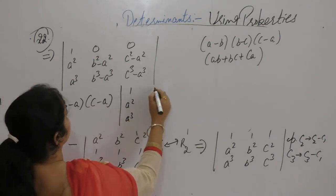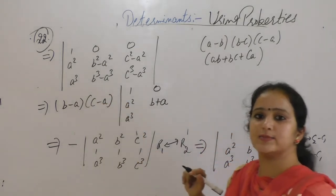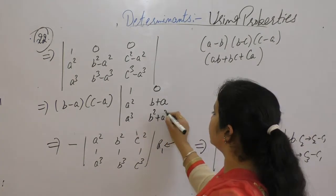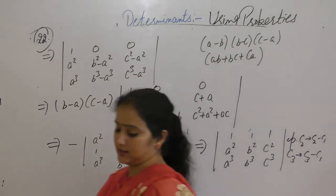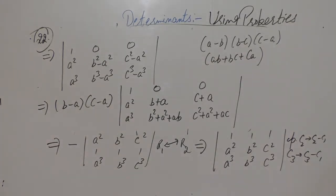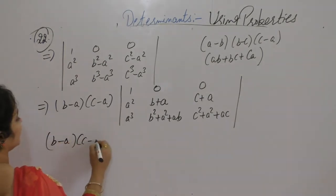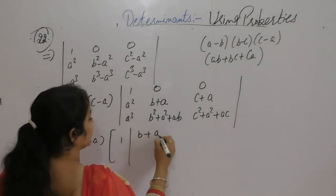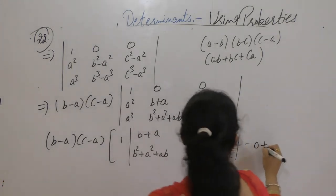After factoring (b minus a) and (c minus a): row 1 is 1, a squared, a cubed; row 2 entries become 0, b minus a with (b plus a) from b squared minus a squared, and (a squared plus ab plus b squared) from b cubed minus a cubed divided by (b minus a); similarly 0, c plus a, c squared plus a squared plus ac. The first row has two zeros so we expand along the first row, giving (b minus a)(c minus a) times the 2×2 determinant with entries b plus a, b squared plus a squared plus ab; c plus a, c squared plus a squared plus ac.